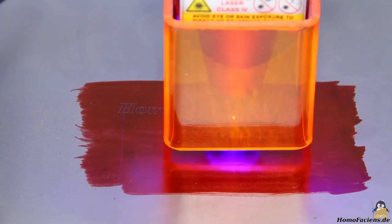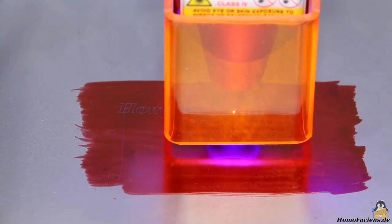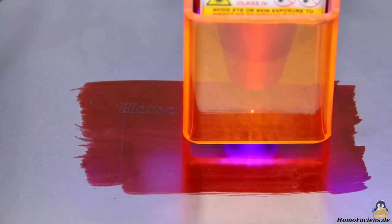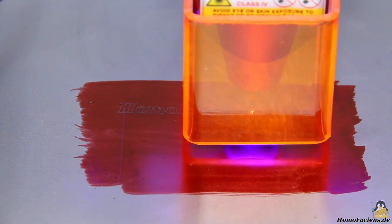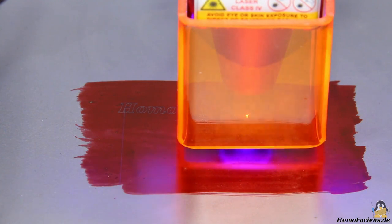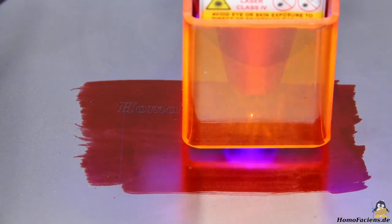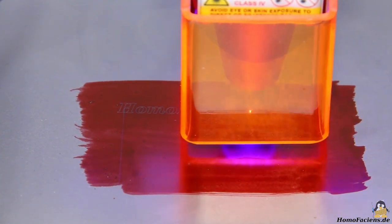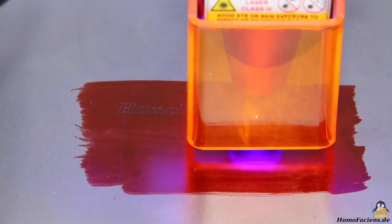According to Ortur, the more powerful modules are also suitable for engraving stainless steel. To do this, however, the surface should be covered with a marker. All colors that can absorb the laser light are suitable, you are on the safe side with black, but red also works fine.